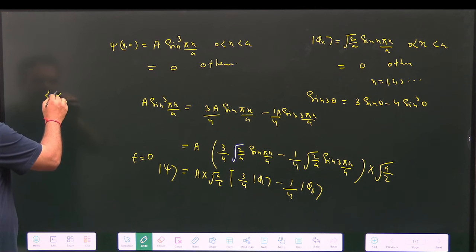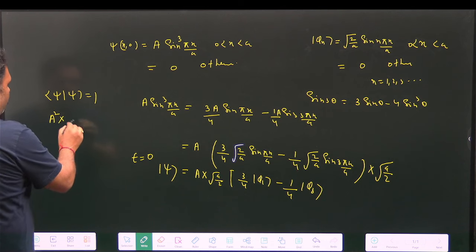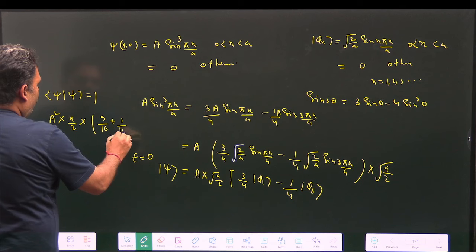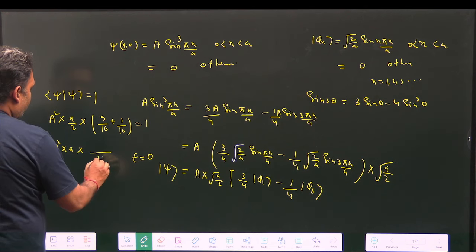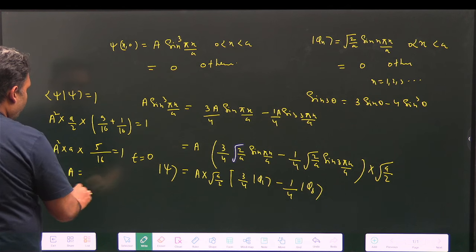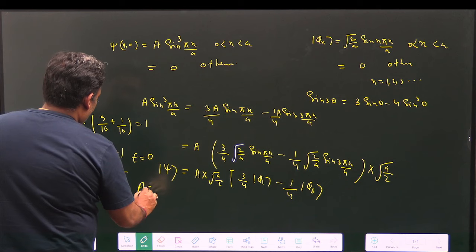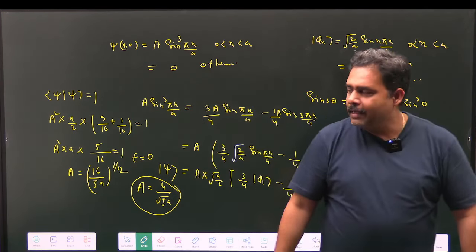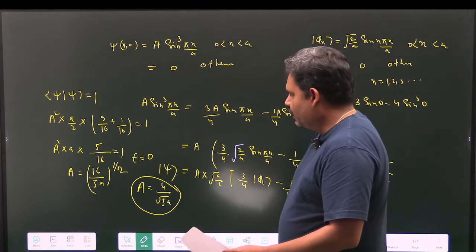For normalization, ⟨ψ|ψ⟩ = 1. This gives A² · (a/2) · (9/16 + 1/16) = 1, so A² · a · (5/16) = 1. Therefore A² = 16/(5a), and A = 4/√(5a). This is the normalization constant.